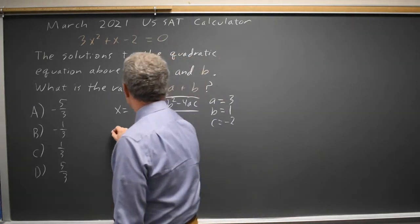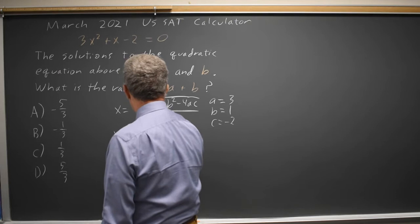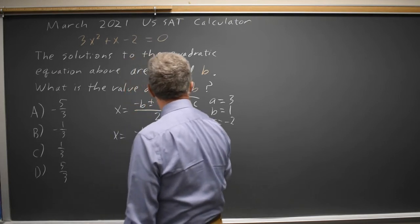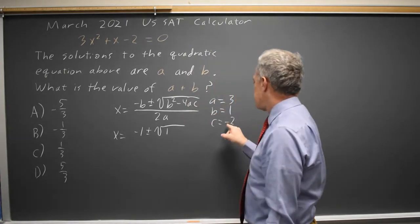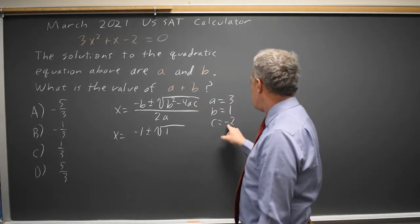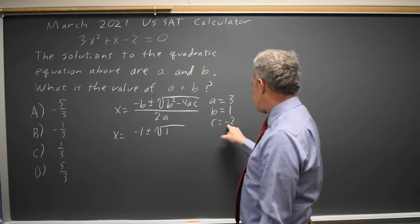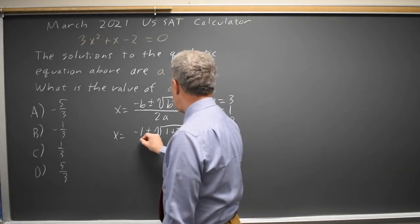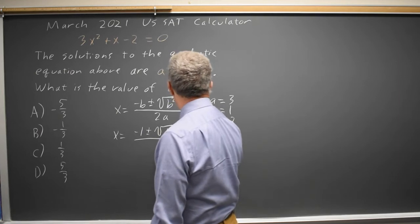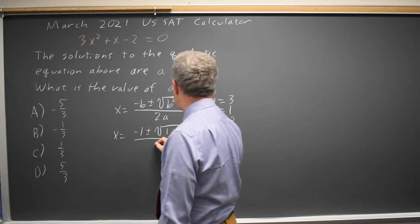So X equals negative 1 plus or minus the square root of 1 squared is 1, minus 4 times negative 2 is positive 8 times 3 is positive 24, over 2A, where A is 3, so 2A is 6.